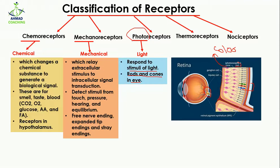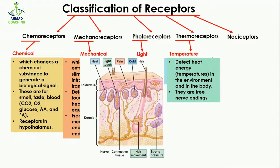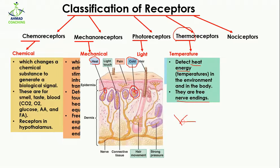Then come the thermoreceptors. 'Thermo' means temperature, so they detect heat energy and cold or warm temperatures in the environment and respond accordingly. They are free nerve endings. Here you can see receptors that detect cold — also free nerve endings, with all endings separated from each other. Similarly, other free nerve endings detect heat, with the endings separate from each other.